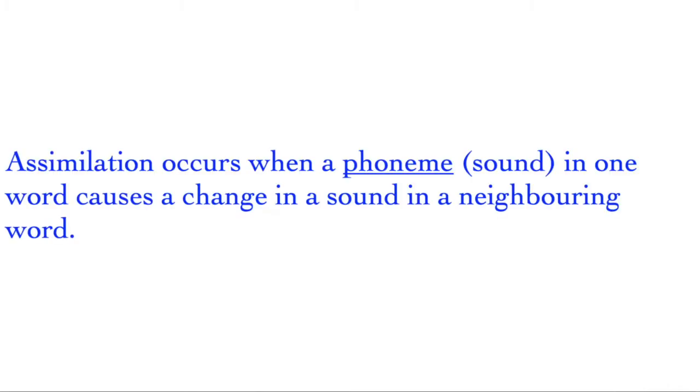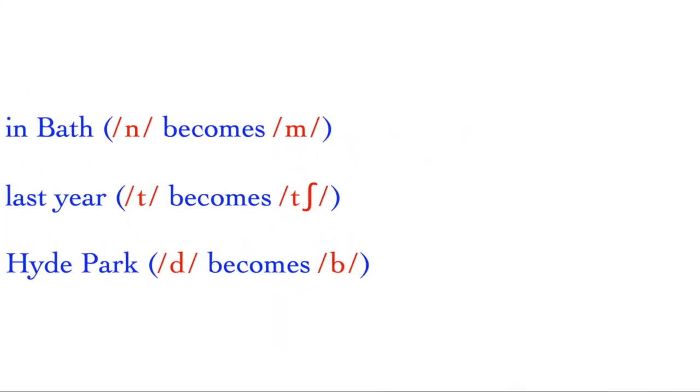Assimilation. Assimilation occurs when a phoneme or sound in one word causes a change in a sound in a neighboring word. For example, 'in bath' - N becomes M. 'Last year' - T becomes CH.